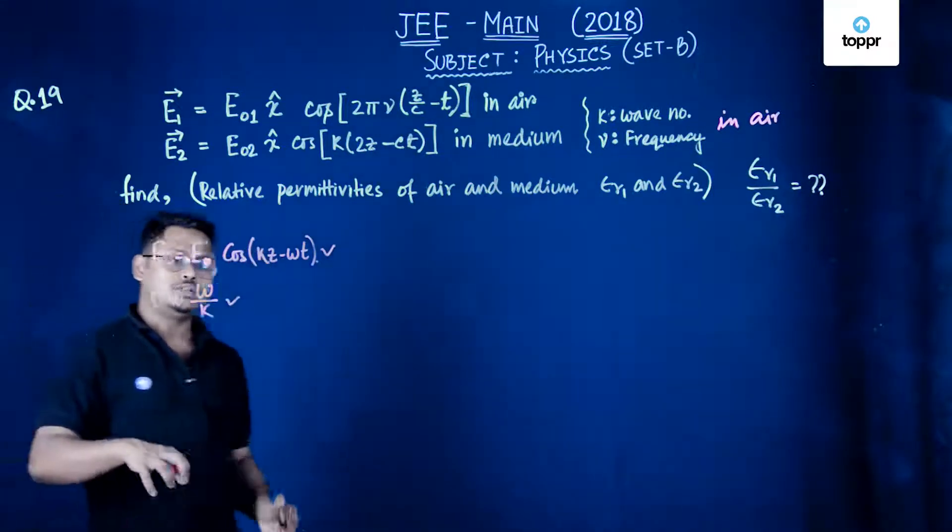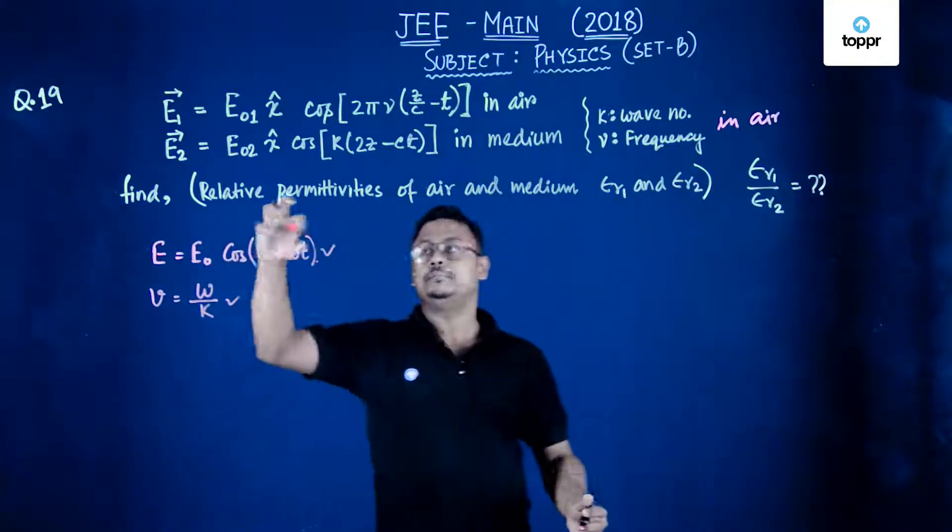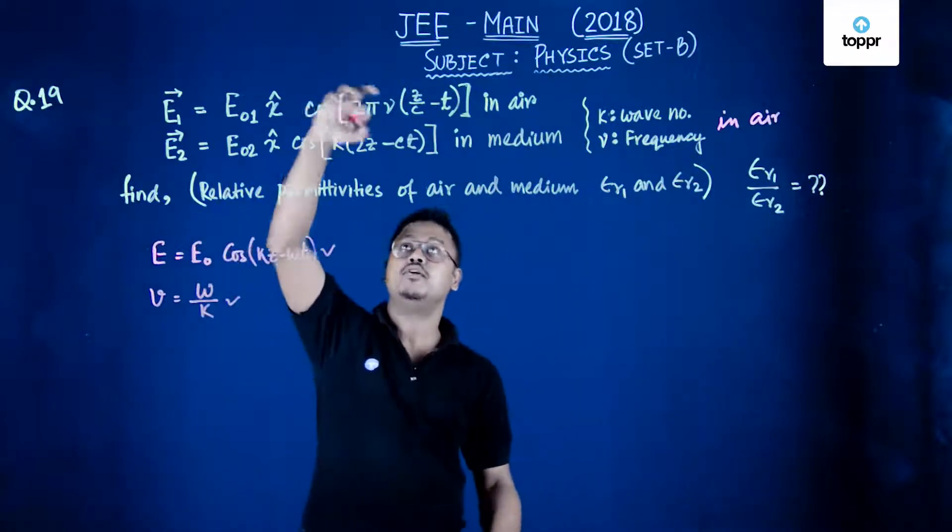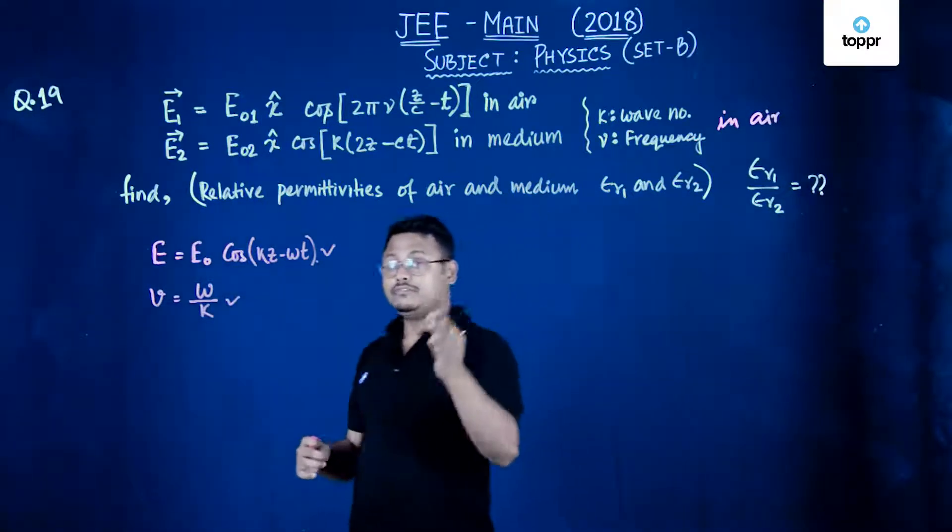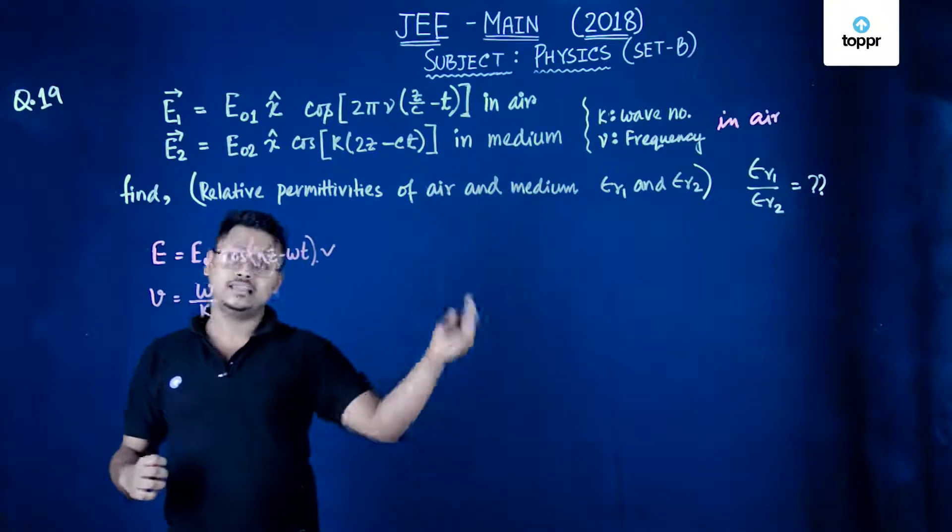So we will follow this wave equation. We will just try to compare this standard format with the format that has been given over here and we will find the velocity of the wave in both the medium that is in air and in some medium.